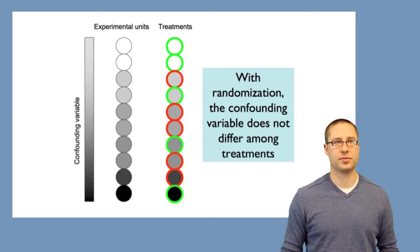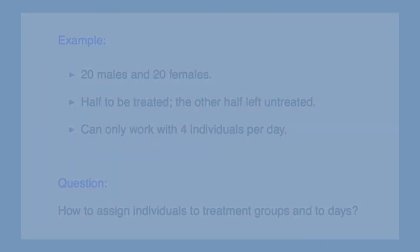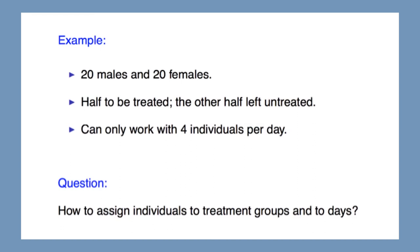So randomization is one way to address the potential problem of confounding. Another approach is stratification — in addition to randomization, you can design your experiment around confounders that you already know about. For example, in a study in mice with 20 males and 20 females, where half are treated and the other half left untreated, and you can only perform the experiment on four samples per day — the question is how do you assign individuals to treatment groups and to days?